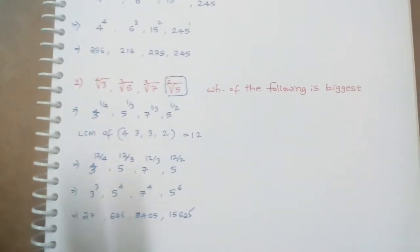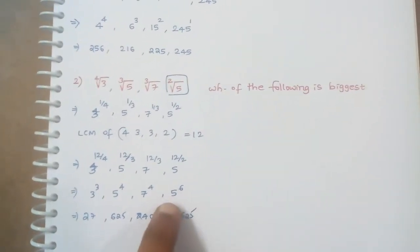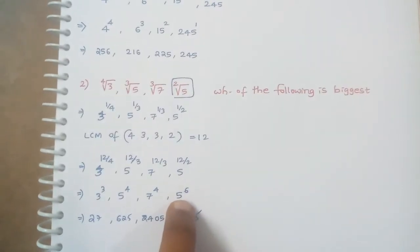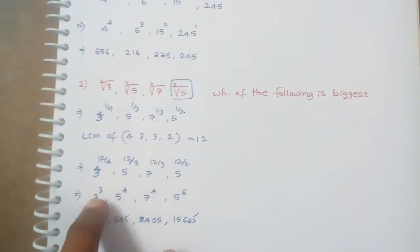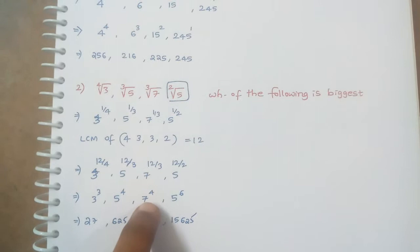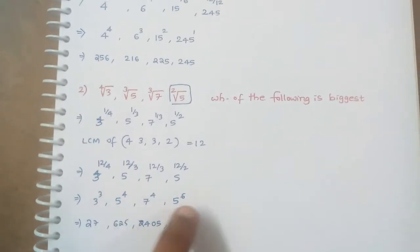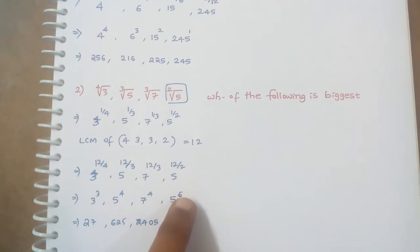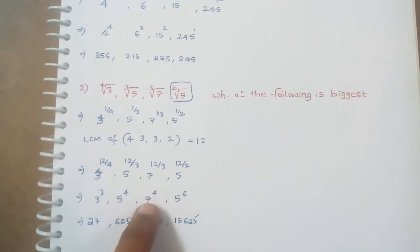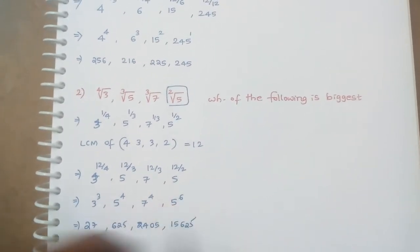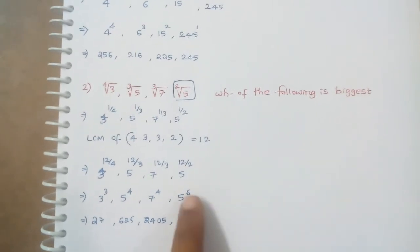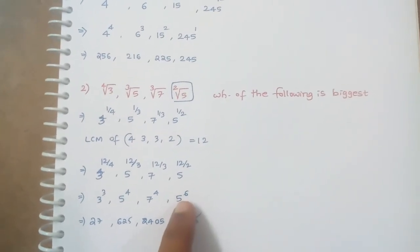Simply you can get an idea that 3 raised to 3 is a smaller value. We know that 7 raised to 4 is a smaller value. And between 5 raised to 4 and 5 raised to 6, this 5 raised to 6 is the bigger value. If you compare 5 raised to 6 with 7 raised to 4, simply we can get the idea that 5 raised to 6 is the bigger value. So its answer is square root of 5 is the biggest value.